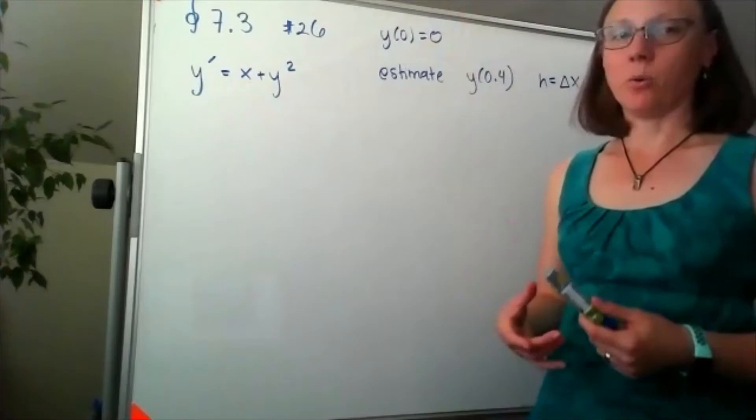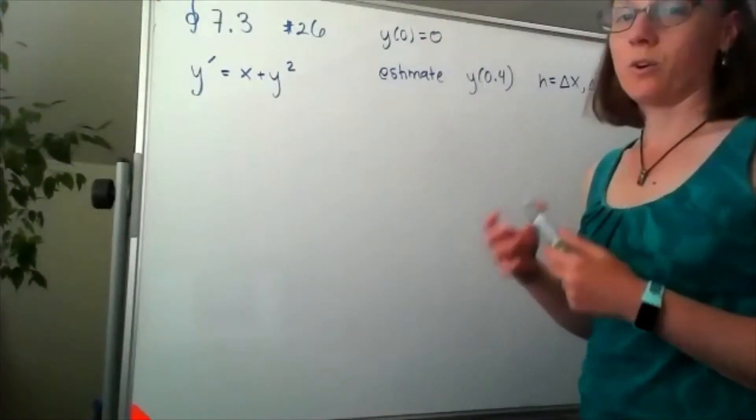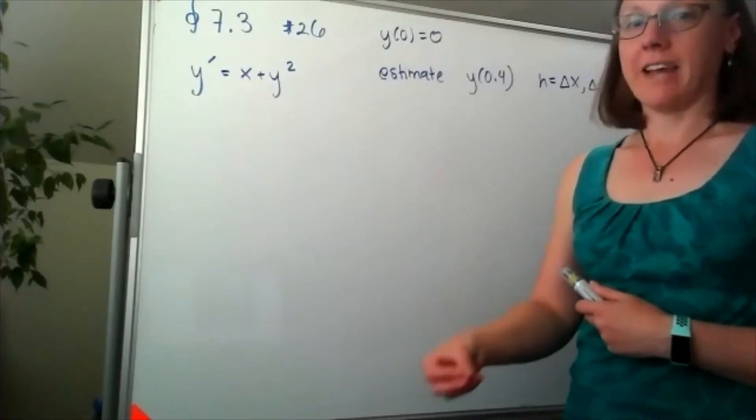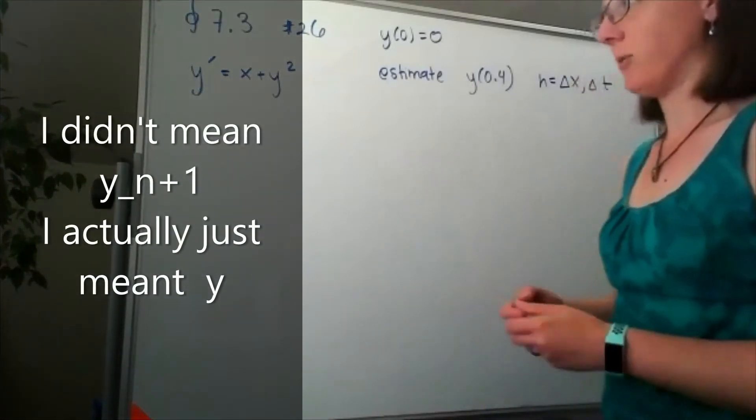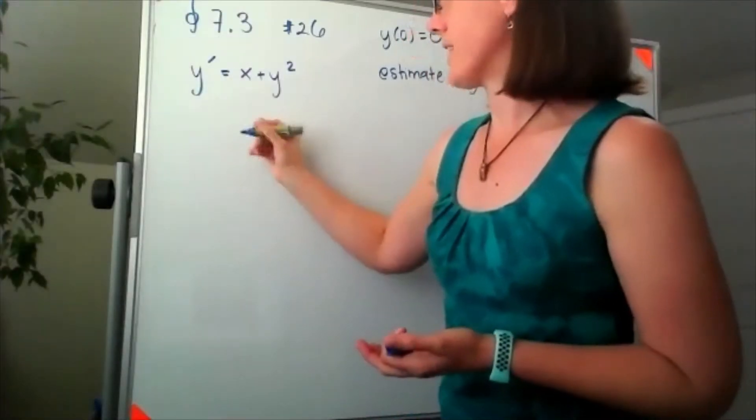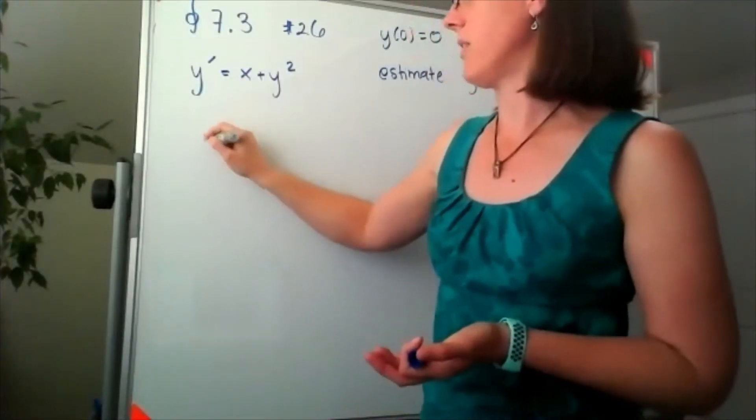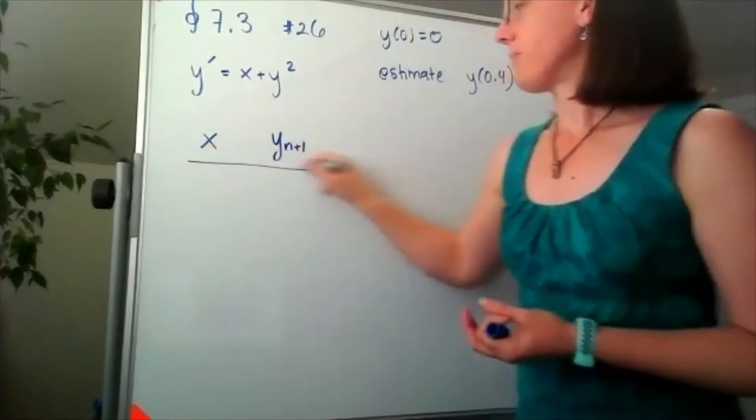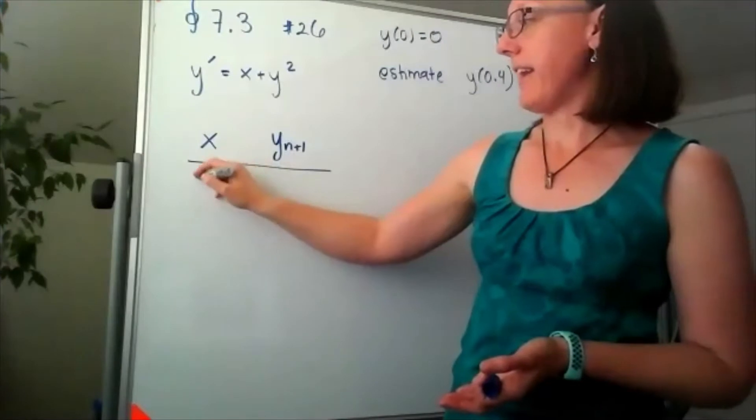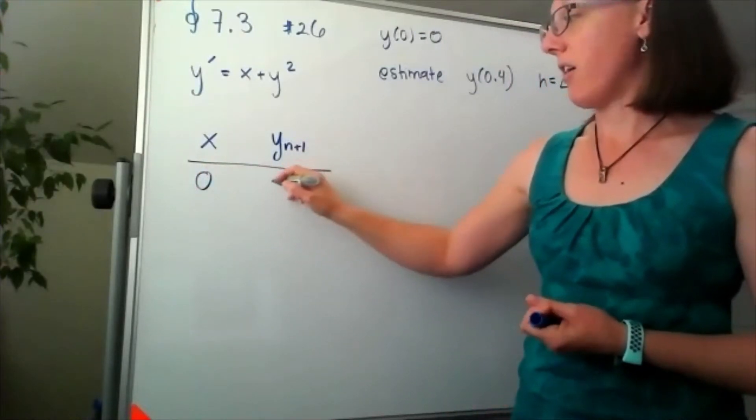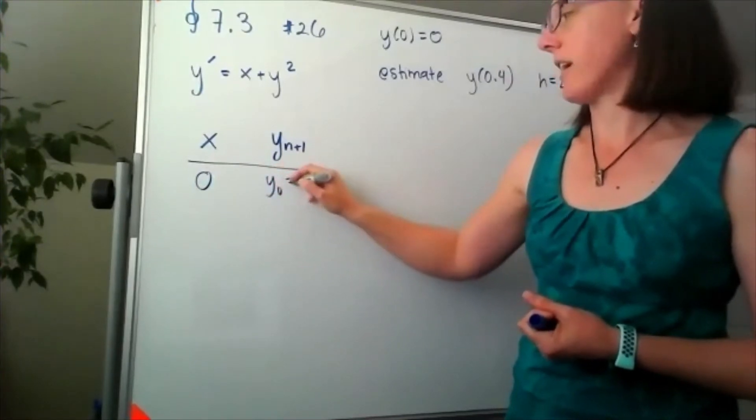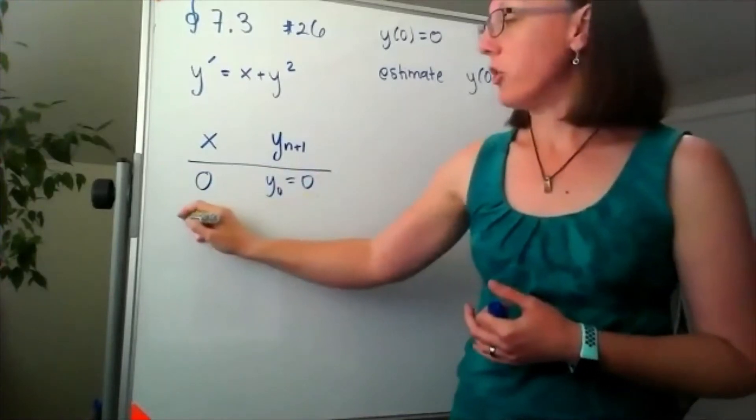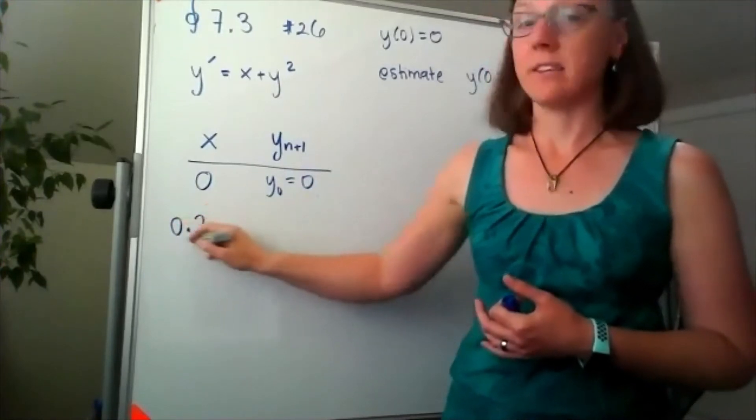The whole idea behind Euler's method is that we're going to use the equation of the tangent line, move along that tangent line for a little step to give us our next estimate of a y value. We're going to start off at an x value of 0 and that means that our y naught is going to be 0. When I take one little step, that step size being 0.2 means that my new x value is at 0.2.